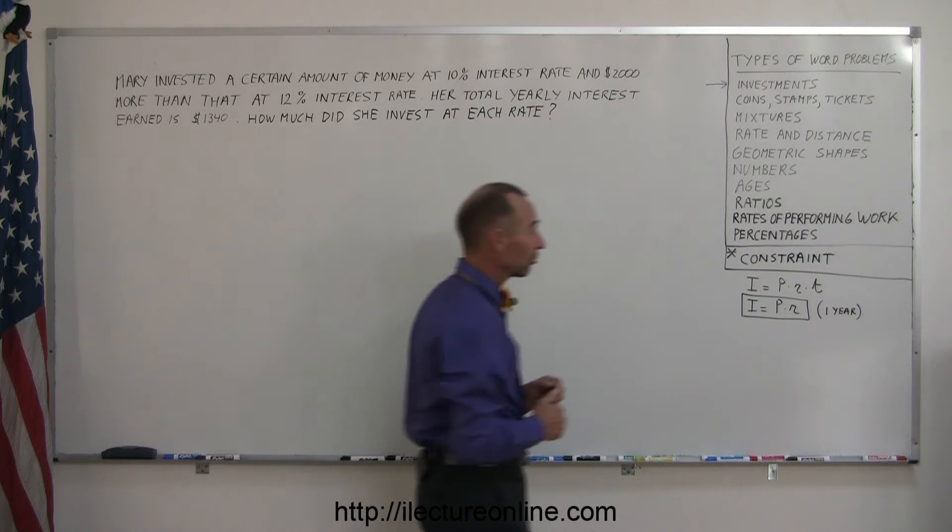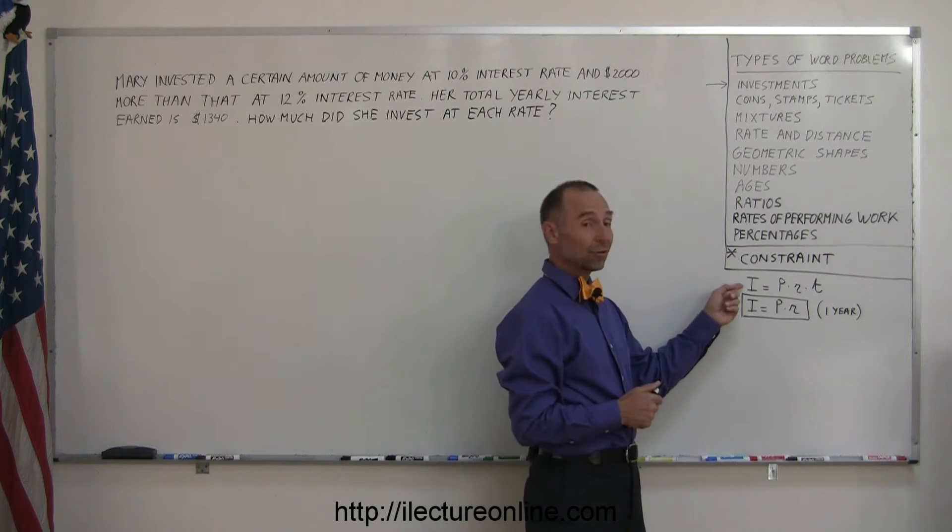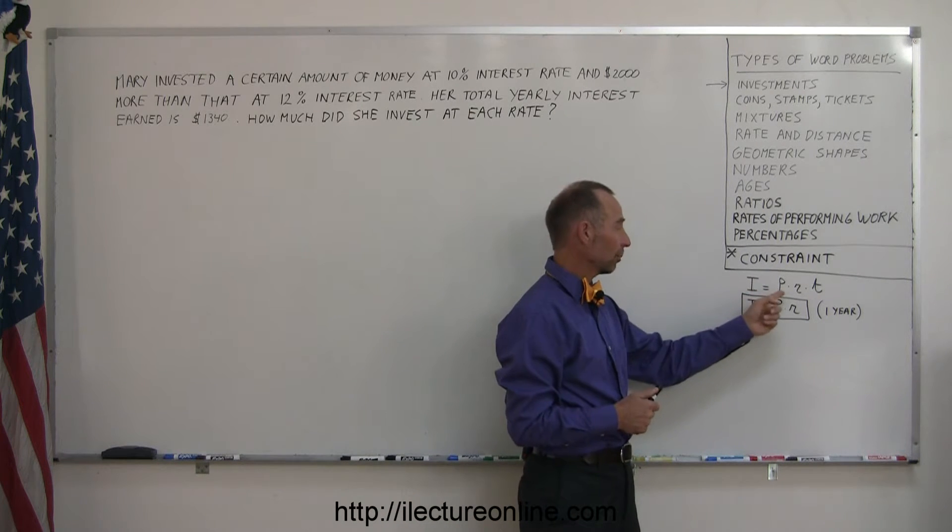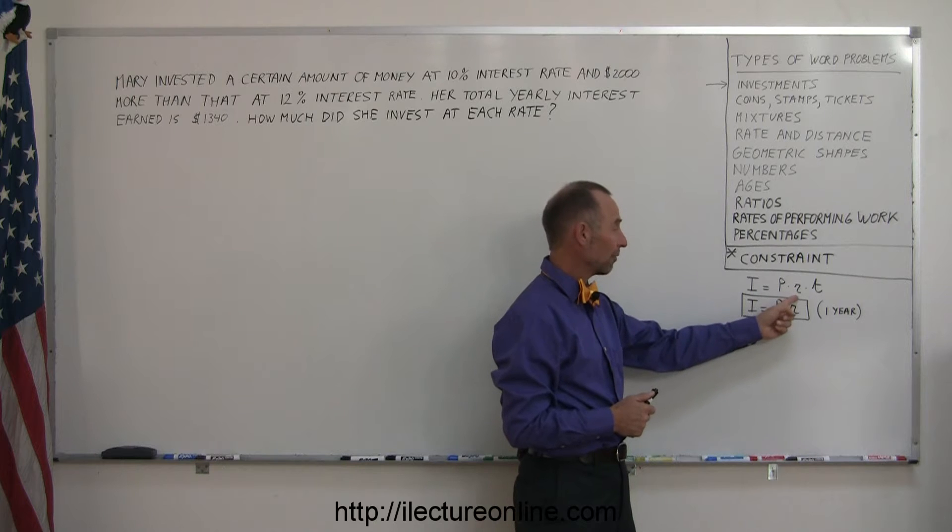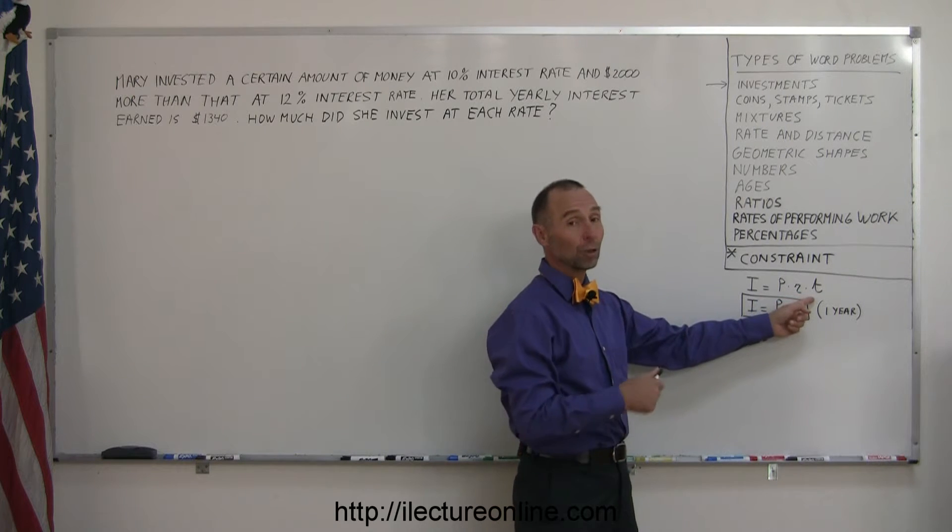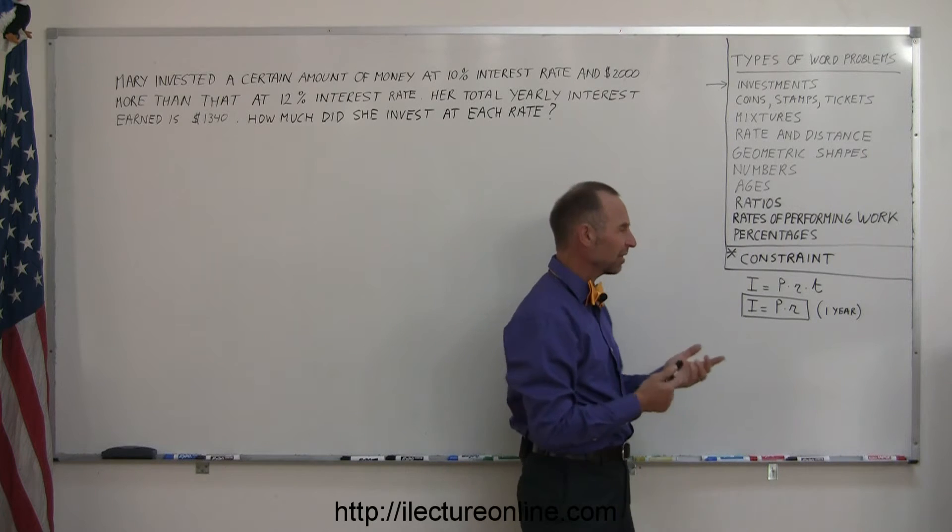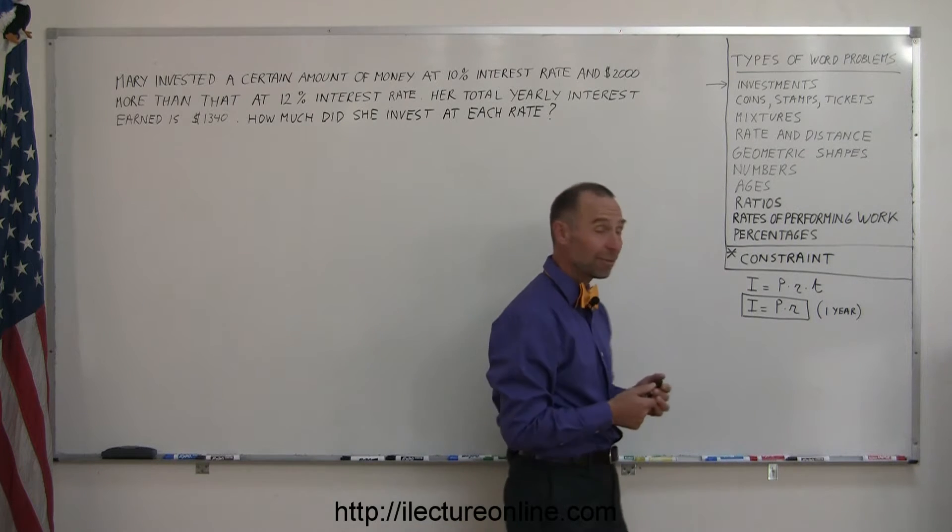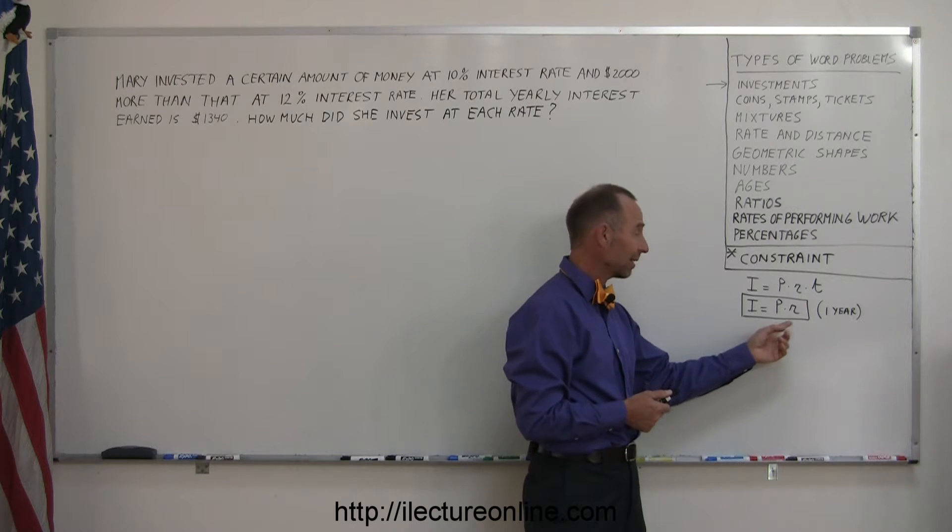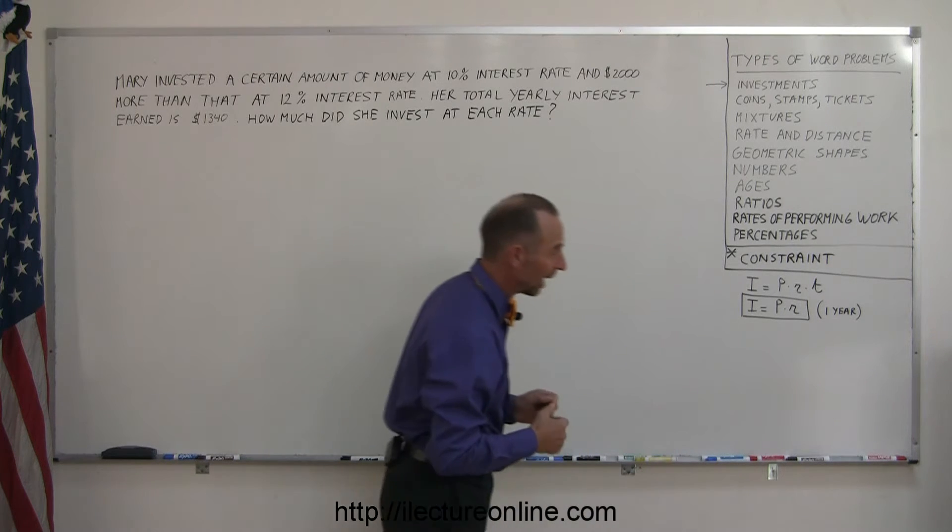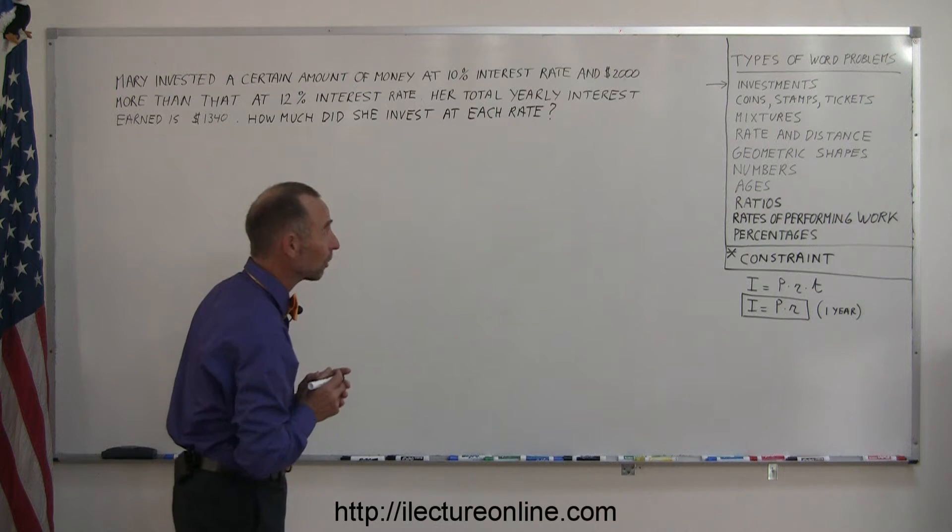One thing we should know before we get started is that the amount of interest you can earn on an investment is equal to the principal times the rate times the time, the number of years you invested for. In algebra, we usually let t equal one year, so it becomes simply interest earned equals principal invested times interest rate. We'll be using that equation in this problem.